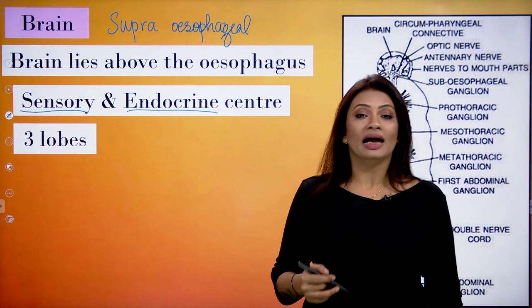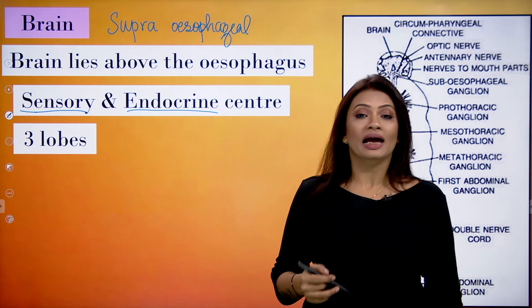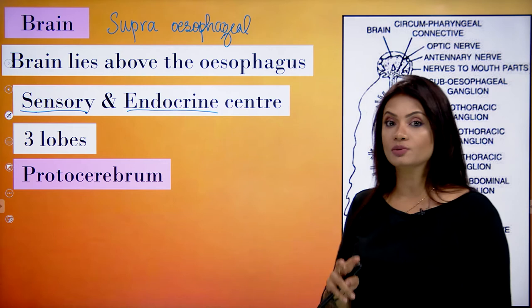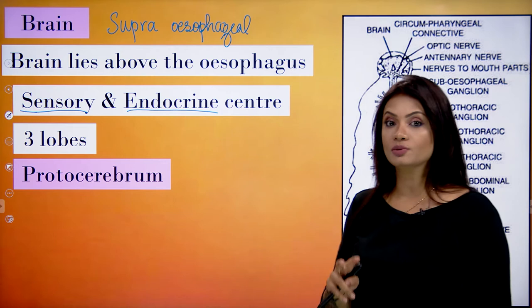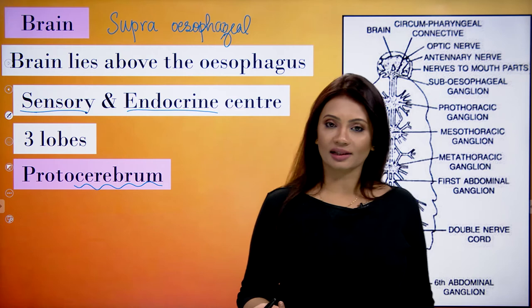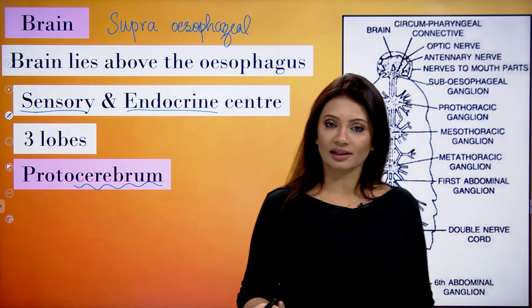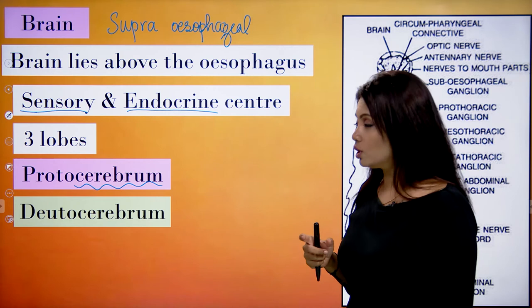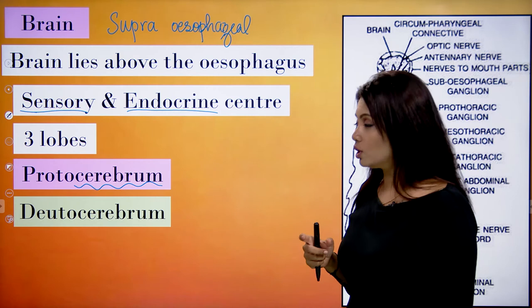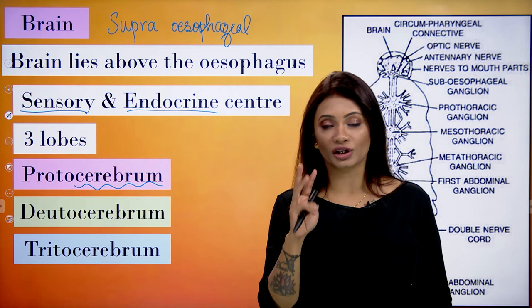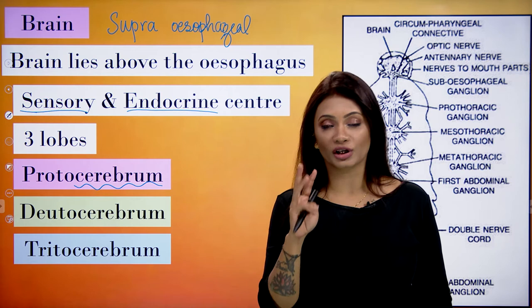The brain, which is the supra-esophageal ganglion, is comprised of three lobes. Because we call it the brain, we may also refer to it as the cerebrum. The three parts are: first the protocerebrum, second the deutocerebrum, and third the tritocerebrum.